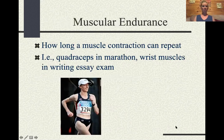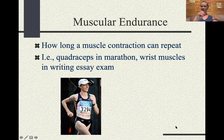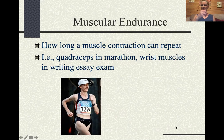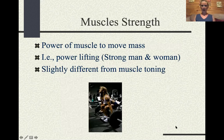Muscular endurance is how long a muscle can contract over and over again — for example, how many times your quadriceps can repeat during a marathon. If you've ever had to write fast in a blue test booklet, the hand cramp you get is because handwriting isn't a muscle most of us train much anymore.